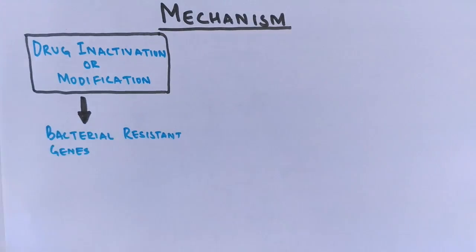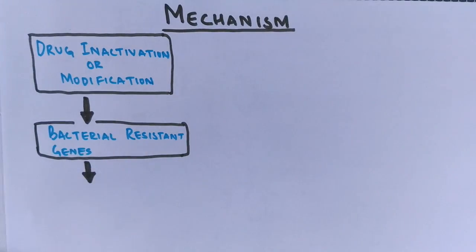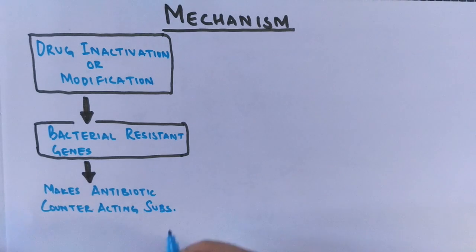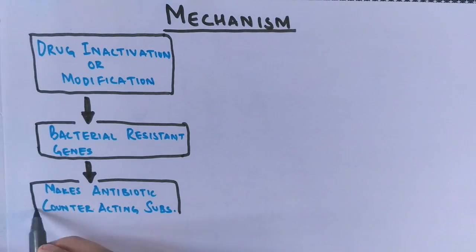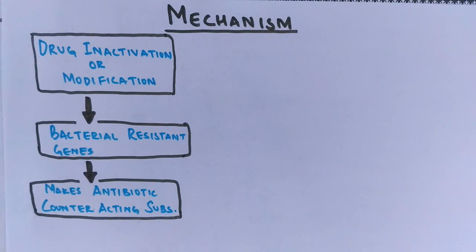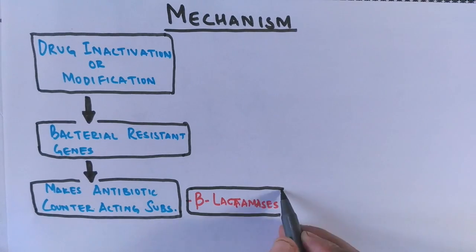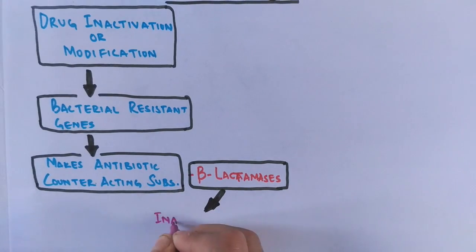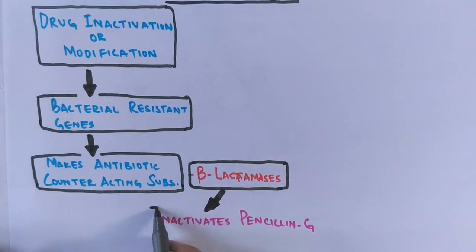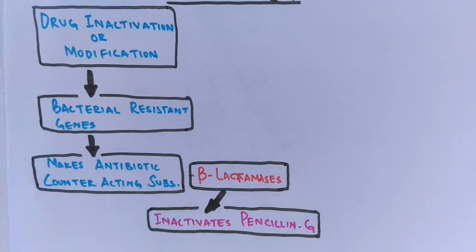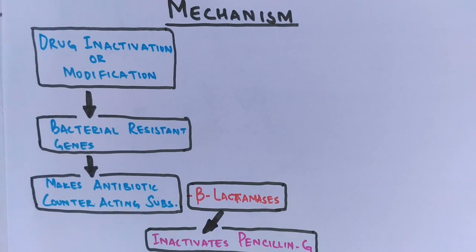In drug inactivation or modification, the resistant genes present in bacteria produce an antibiotic-counteracting substance — basically a protein — that is able to shut down or evade the antibiotics, by which the bacteria remains unaffected. For example, beta-lactamases are produced by bacterial strains that inactivate penicillin G. This is the first mechanism by which bacteria is able to switch off antibiotics.